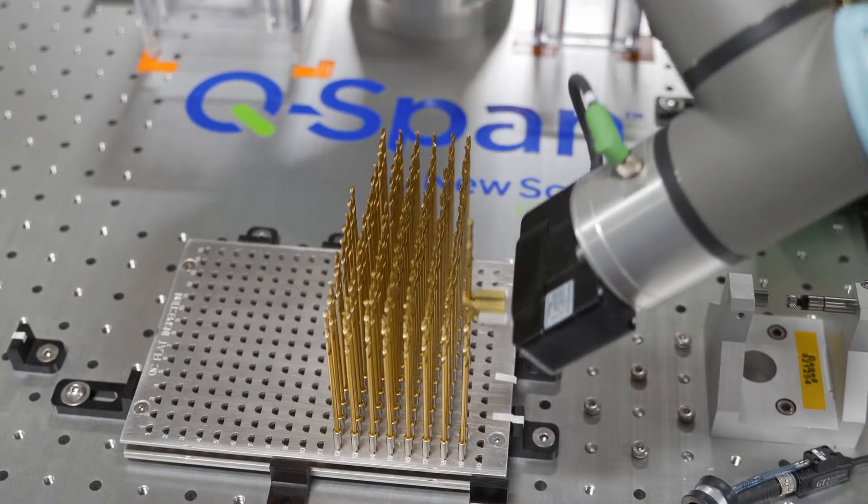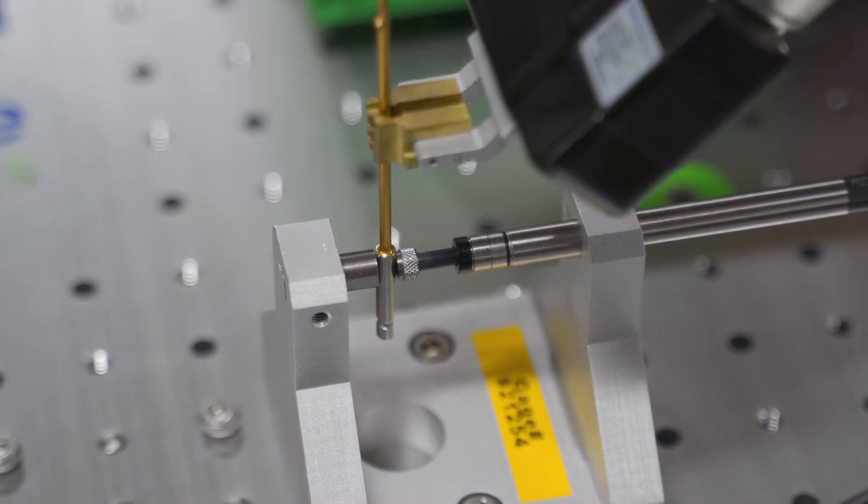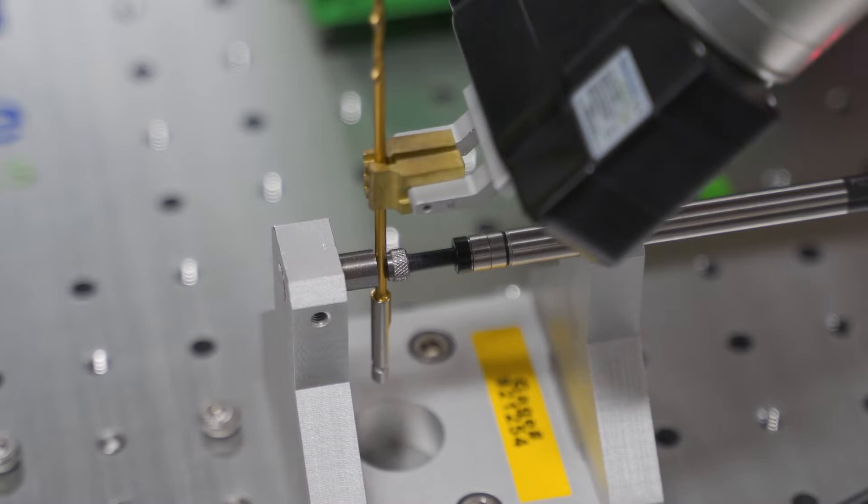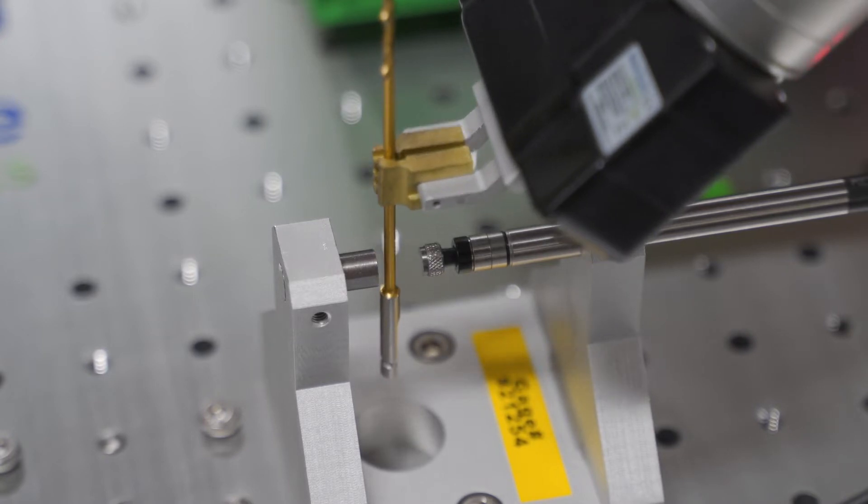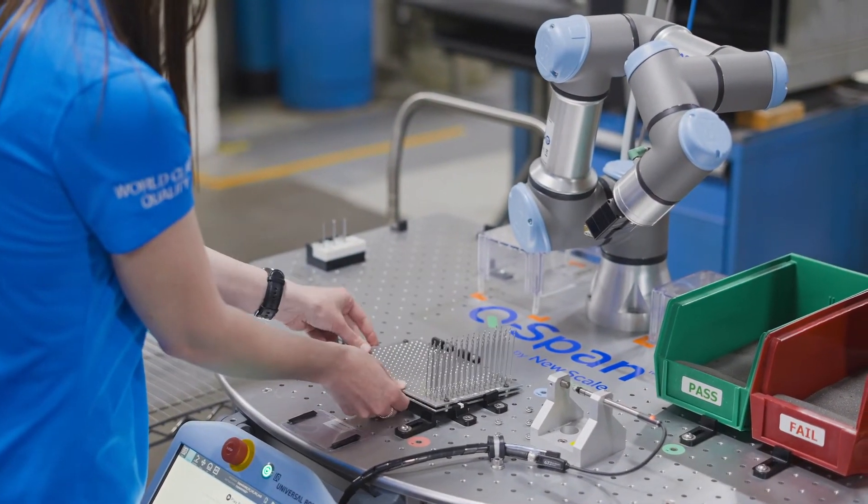We are able to save upwards of 50 hours a week of inspection time. It allows us to deploy an entire quality resource to more value-add activities. The 50 hours a week saved will, we believe, scale as we further optimize the Q-SPAN workstation within our factory.